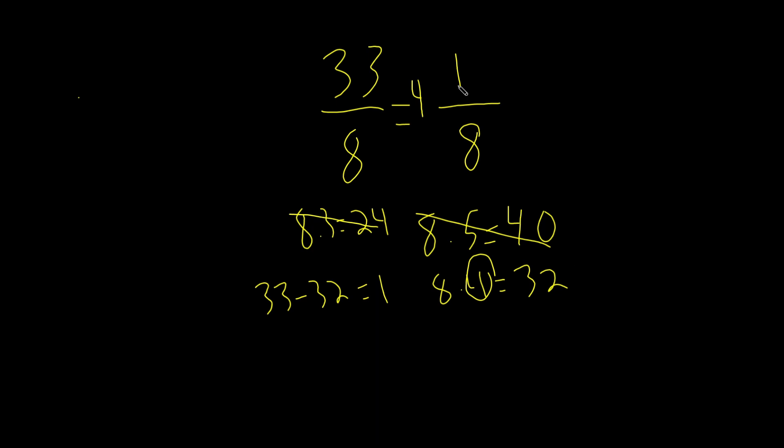So 33 minus 32 is 1. And that is our new numerator. So 4 and 1 eighth is our mixed number form. Now let's do another problem. Let's do 24 over 7. How do we convert this into a mixed number?